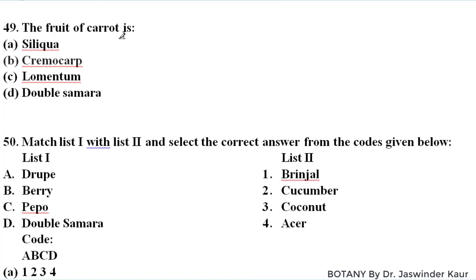The fruit of carrot — carrot belongs to family Apiaceae, and in Apiaceae the fruit is always the cremocarp. So the fruit of carrot is cremocarp.